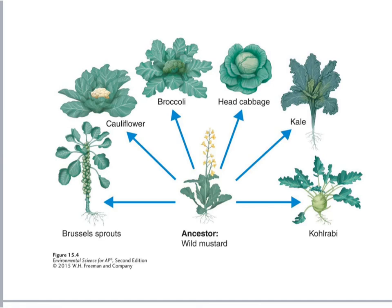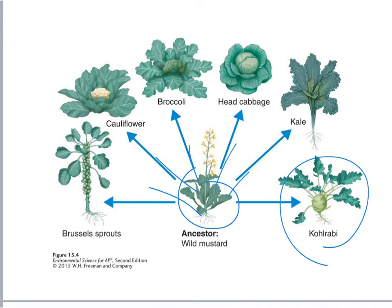Plants can be far more complicated but also very interesting. Starting with a single species of wild mustard, plant breeders have produced a variety of food crops like cabbage, cauliflower, broccoli, Brussels sprouts, kale, and a variety of other things shown here. You can see how from just one plant we have this whole variety created.